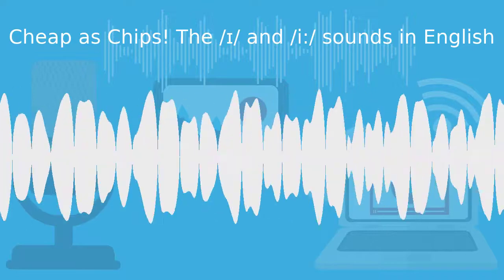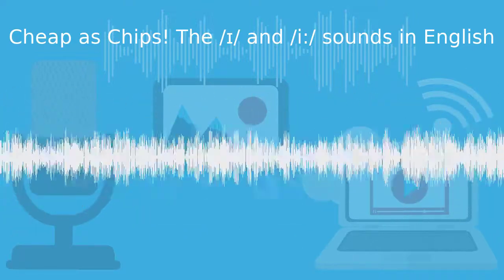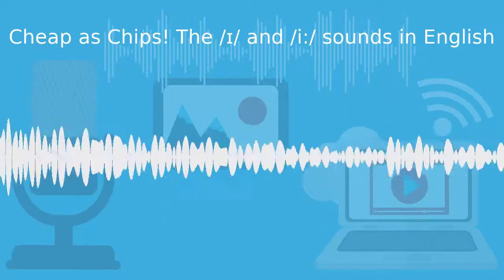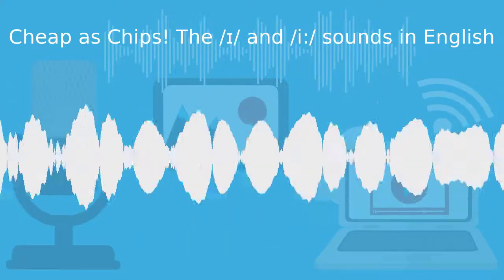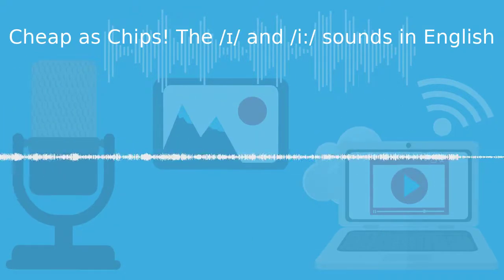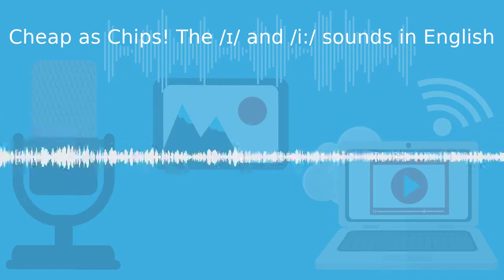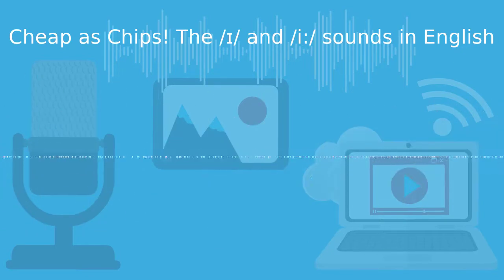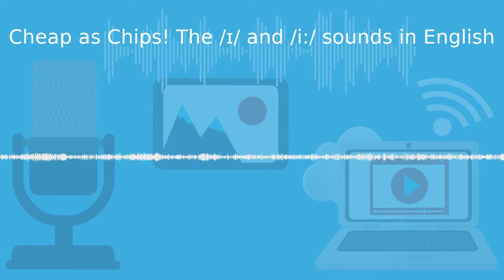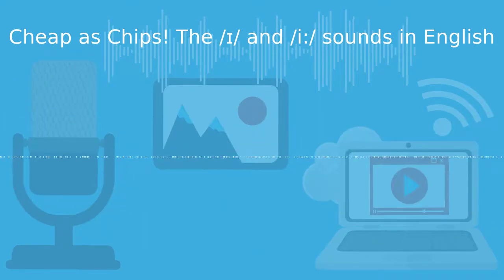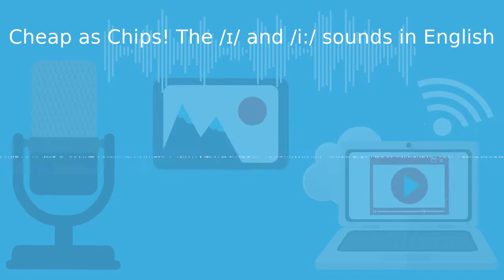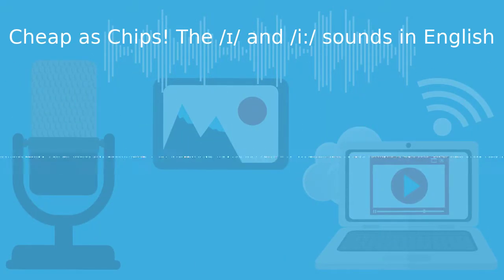So let's practice a few common words with the i sound. And there are so many to choose from here. It really is a common sound. I've just gone with 12 for you today. Listen and repeat. Big, chicken, finish, fish, his, quickly, river, this, ticket, tourist, trip, which.